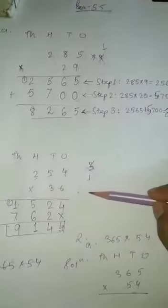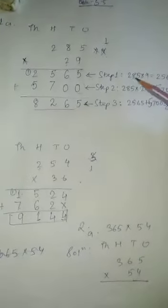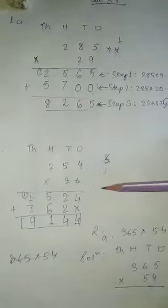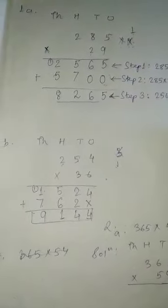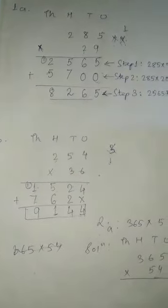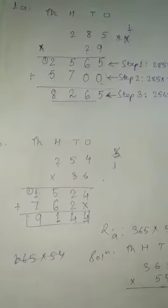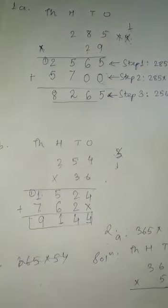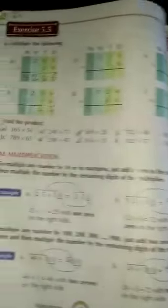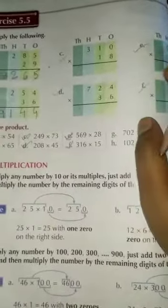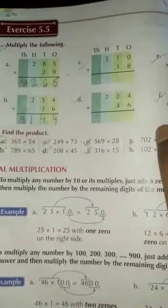So students, I have shown you two ways — one is step-wise and one is without steps. If you write in the exam either way, you will get full marks. Whichever is easier for you, do that one. Students, is it clear? So 1A and B I have solved for you. C, D, E, F — all these questions you have to solve in your book on your own. Is it clear?